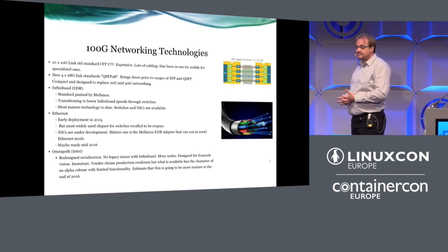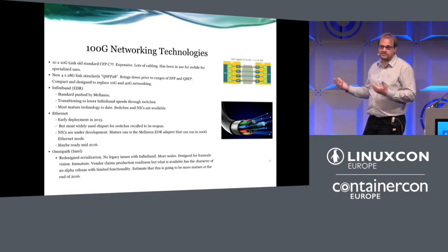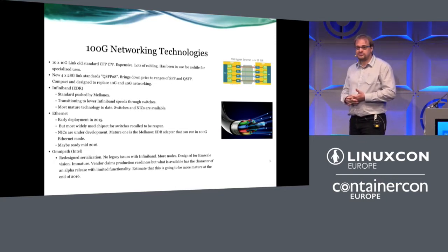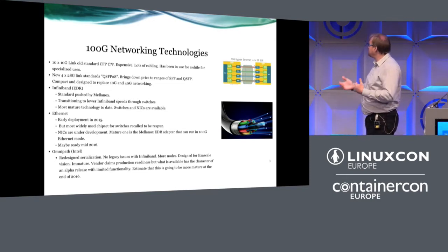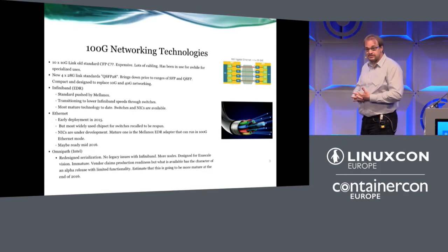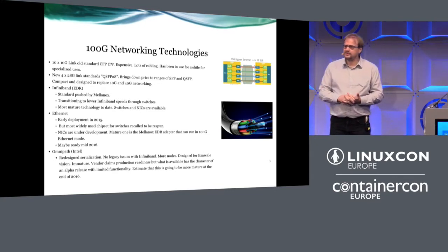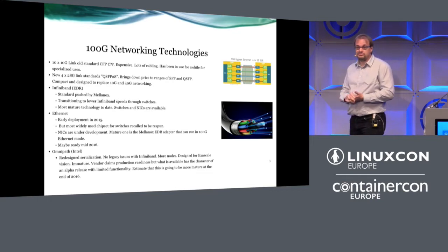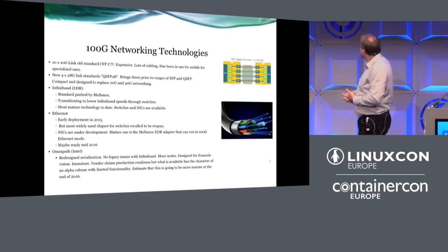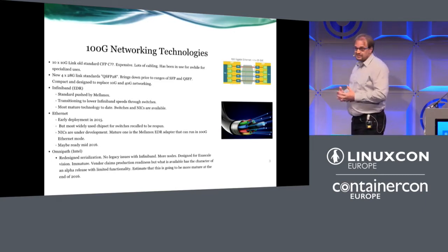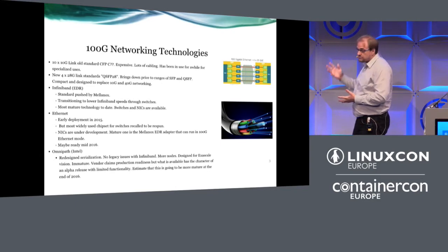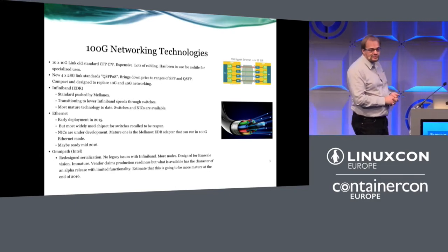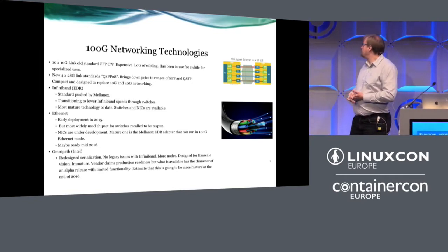Then there's Omnipath, Intel's InfiniBand solution. They're trying to challenge Mellanox because they see it as very important for the exascale government vision and machine learning. They redesigned the serialization to be compatible with InfiniBand — if you have an InfiniBand app you can run on Omnipath. It supports more nodes: InfiniBand is limited to around 16K nodes, while the exascale vision calls for 100K to a million nodes. However, we had many issues with our testing and found it more alpha-quality. Intel is reworking the Omnipath solution with a new version coming next year.